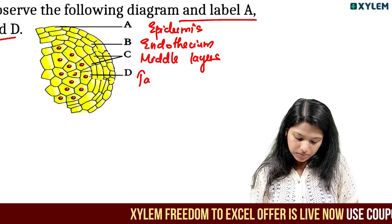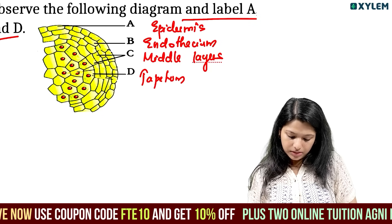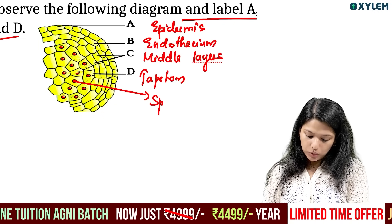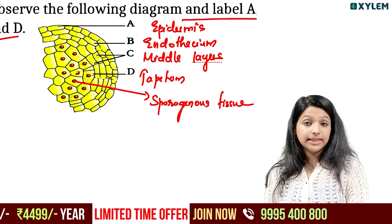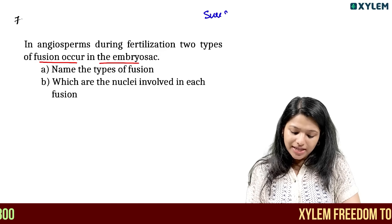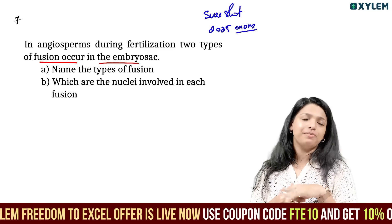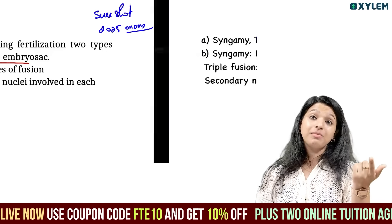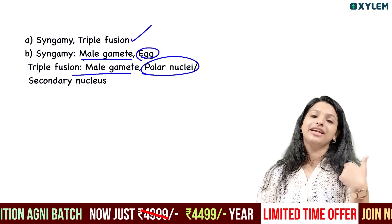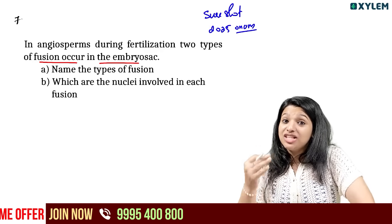Tapetum is the innermost layer of the microsporangium. The tapetum surrounds the sporogenous tissue. During fertilization, two types of fusion occur. Syngamy is the fusion of the male gamete with the egg. Triple fusion involves the male gamete fusing with the polar nuclei to form the secondary nucleus — this results in double fertilization.